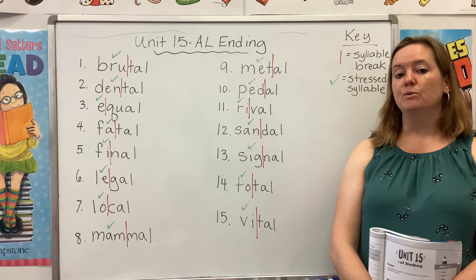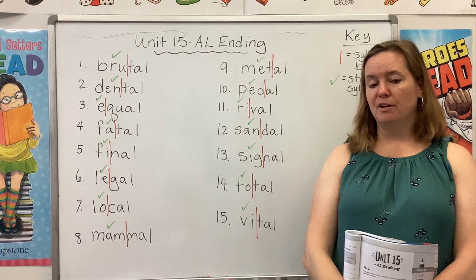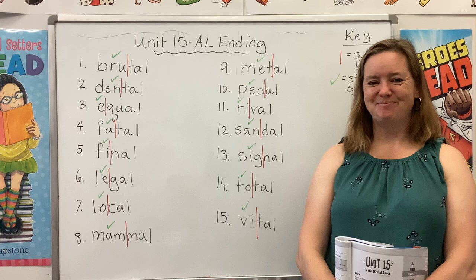You will notice that I already went through the list and used a red line to break our words into syllables. I also used a green check mark to mark off the stressed syllable. That's the part of the word we say a little louder and a little stronger. If you'd like to pause the video for a second to mark up your own list, please go ahead and do that.